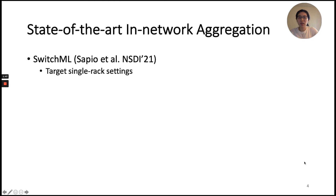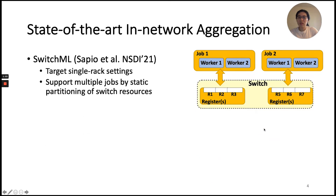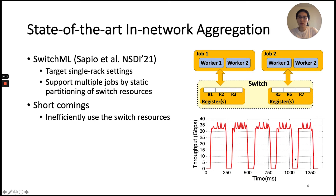SwitchML is the first work to do in-network aggregation for distributed training, targeting single-rack settings. To support multiple jobs, SwitchML proposes to statically partition the switch memory among jobs before job start. As this figure shows, each job gets allocated a partition of switch memory for the entire job's duration. However, this approach has two main shortcomings. First, we observe that distributed training jobs go through on-and-off aggregation phases. The intervals when throughput is zero are where computation takes over — no network communication happens — but the switch memory is still reserved for those jobs. This static allocation leads to inefficient usage of switch resources.